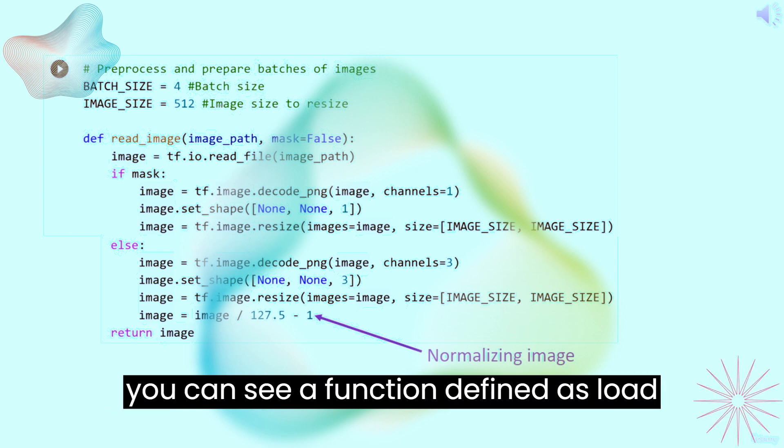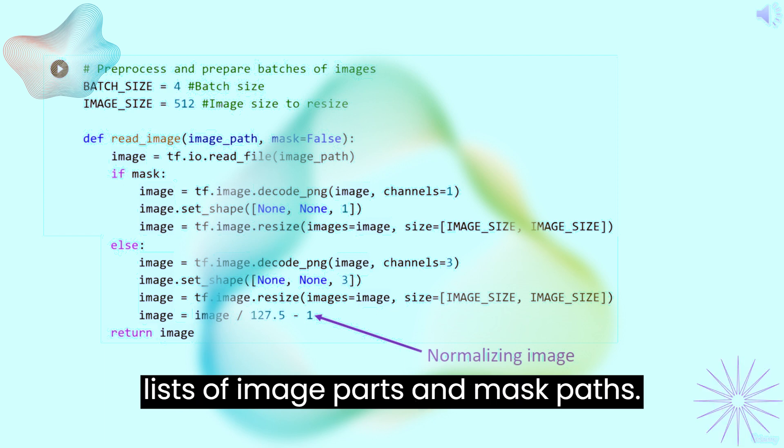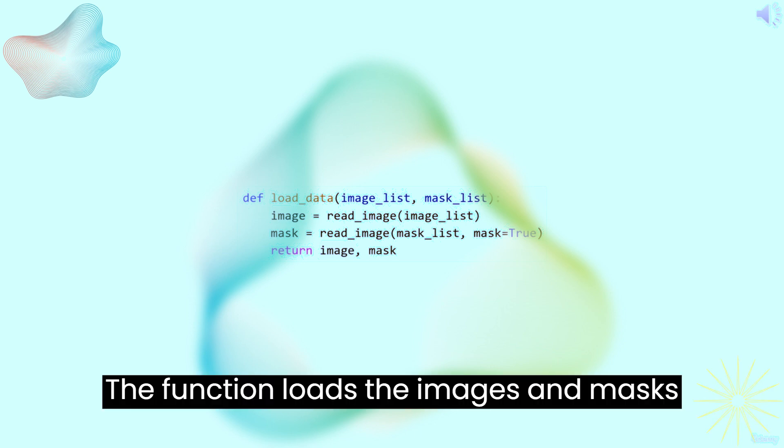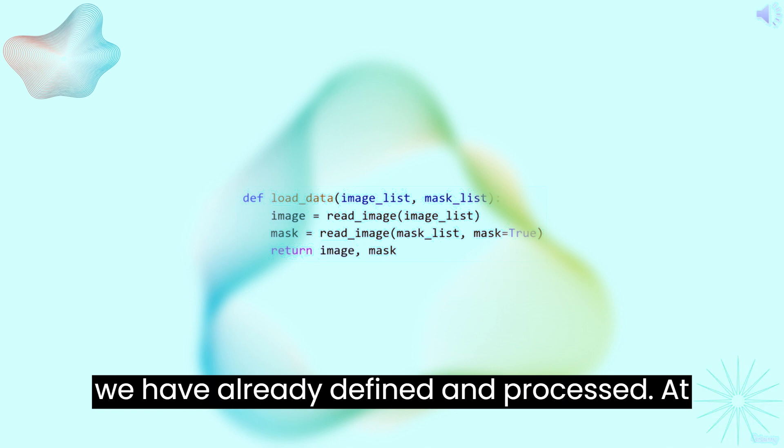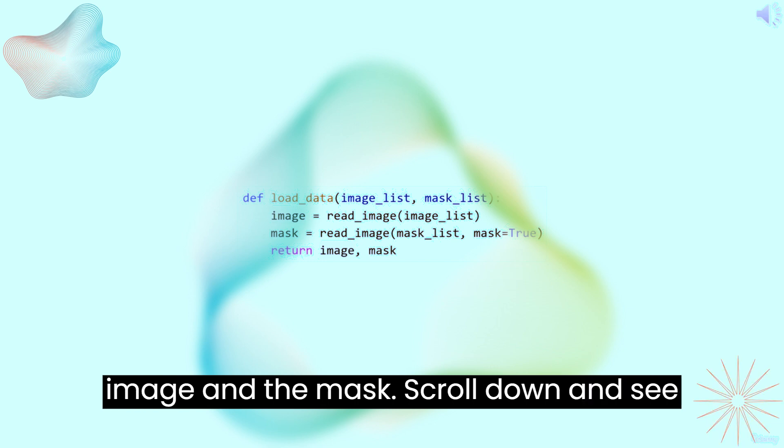Scroll down, you can see a function defined as load_data. This function gets both in two lists of image paths and mask paths. The function loads the images and masks using the helper function read_image that we have already defined and processed. At last, the function returns a processed image and the mask.